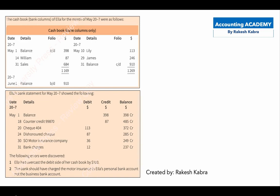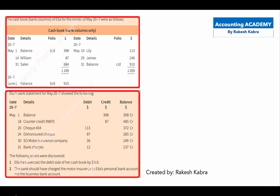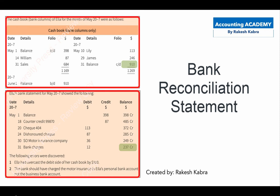For this purpose we prepare a bank reconciliation statement. Let's take an example. Here we have the cash book and a bank statement of a business. We can see that the closing balance in the bank statement is $237, and the closing balance in the cash book is $910. Both balances are not the same, so we need to prepare a bank reconciliation statement to find the reasons behind the difference.